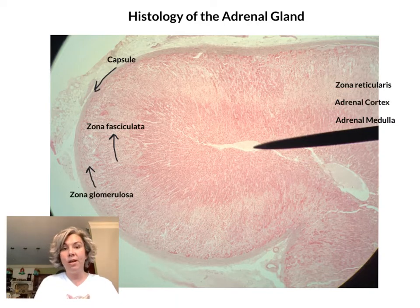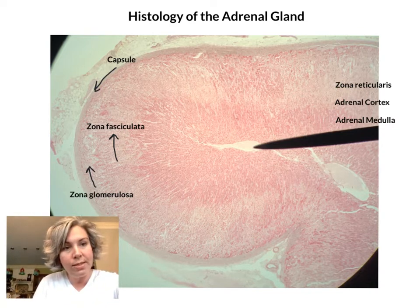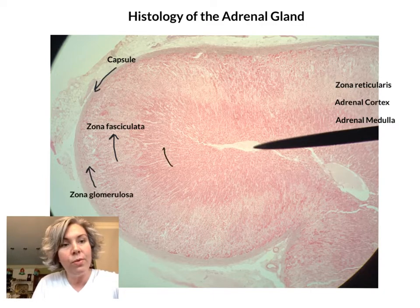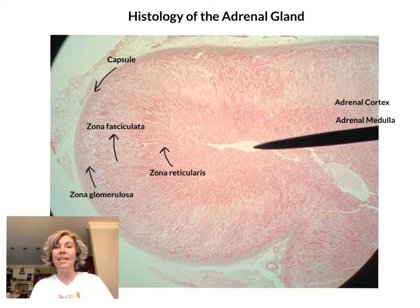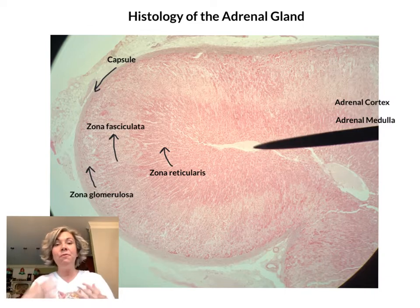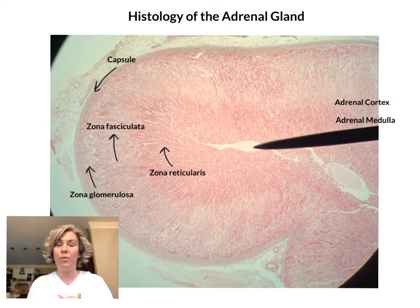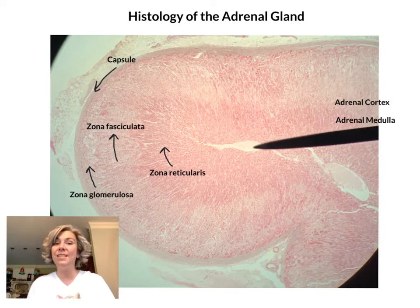Just below the zona fasciculata is the zona reticularis. We can see the cells start to get a little bit darker as we go deeper. The zona reticularis secretes a hormone called DHEA, and it's an androgen — meaning it's a male hormone. Both males and females secrete DHEA, and some of that hormone is converted into estrogen in both males and females. So females have male and female hormones and males have male and female hormones — we have a little bit of both regardless of gender. The zona reticularis helps to secrete and supplement sex hormones that play a role in various activities in the body.